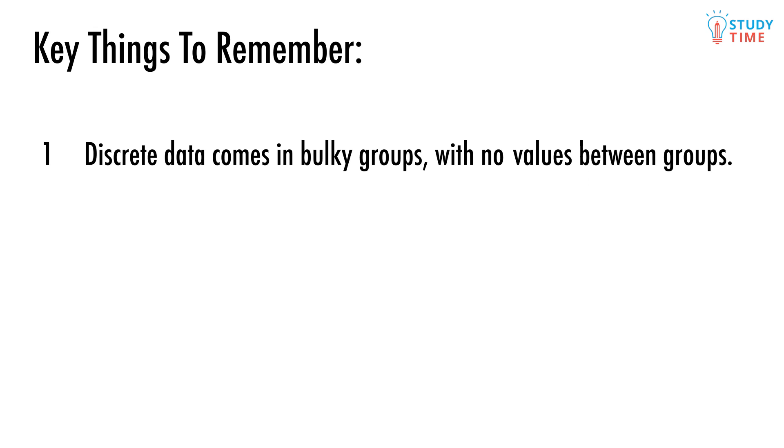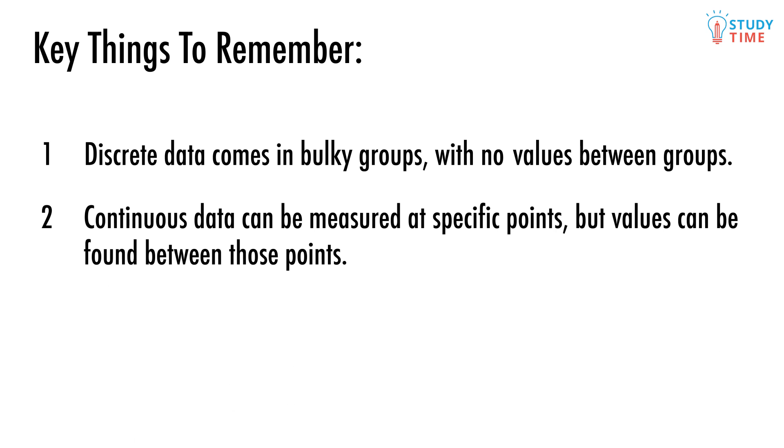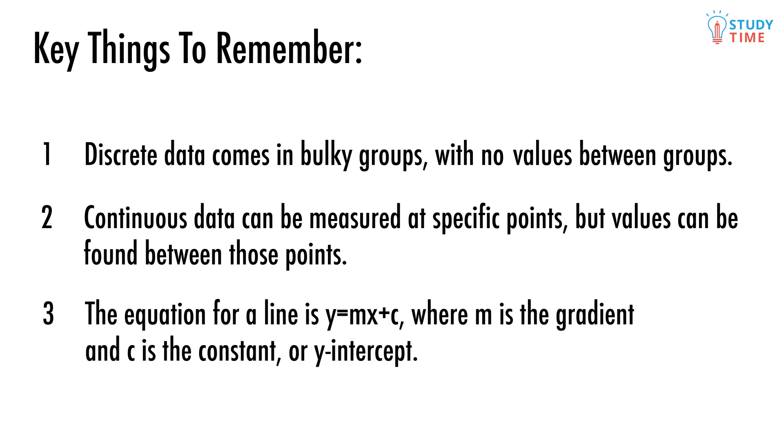Not too tricky, huh? Remember: discrete data comes in bulky groups with no values between groups. Continuous data can be measured at specific points, but values can be found between those points. The equation for a line is y equals mx plus c, where m is the gradient and c is the constant or y-intercept.